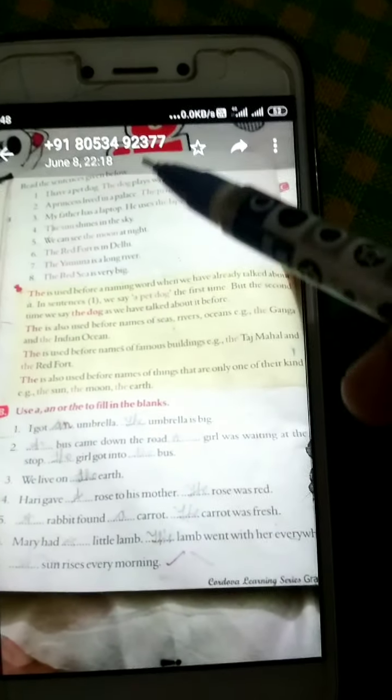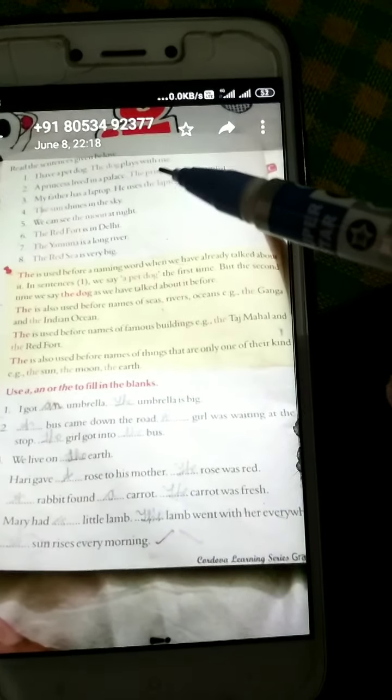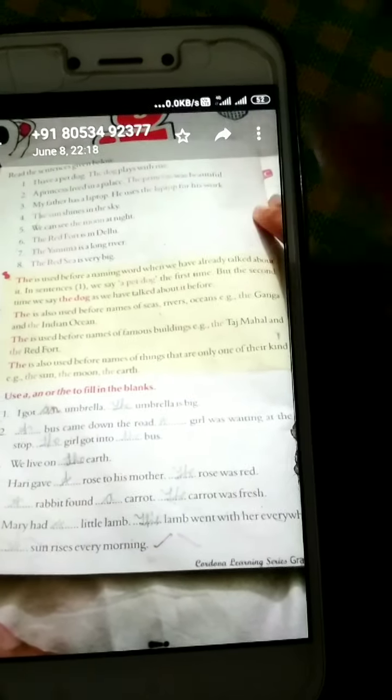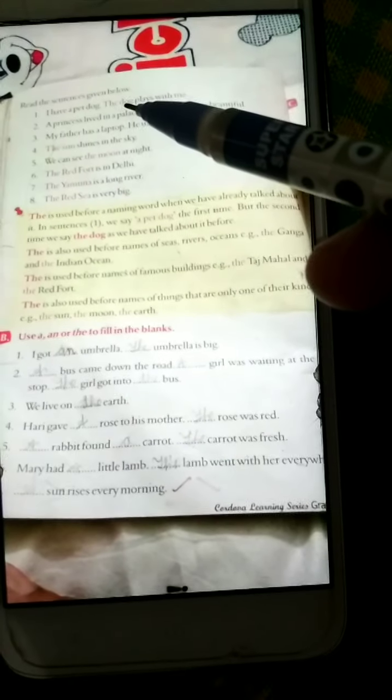I have a pet dog. The dog plays with me. And in the next sentence I am again repeating the dog, so we will use here the article 'the'.